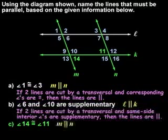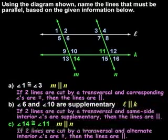Therefore, lines M and N must be parallel because if two lines are cut by a transversal and alternate interior angles are congruent, then the lines are parallel.